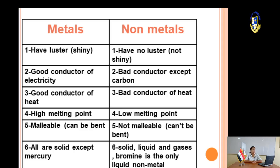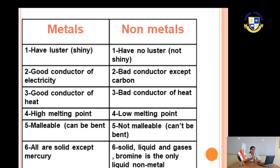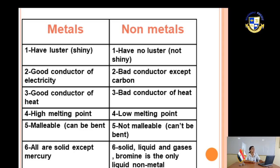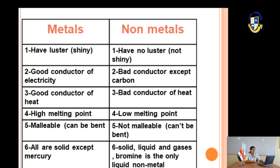Comparing metals and non-metals: metals are shiny, good conductors of electricity and heat, have a high melting point, and are malleable. All metals are solid except mercury. Non-metals have no luster, are bad conductors of electricity — except carbon, which is a good conductor — bad conductors of heat, have a low melting point, and are not malleable. Non-metals can be solid, liquid, or gas; bromine is the only liquid non-metal.